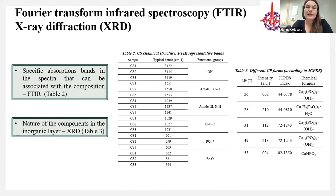FTIR delivers key data about molecular vibration within functional groups, resulting in specific absorption bands in the spectra that can be associated with the composition. In our study, we identified functional groups presented in Table 2. All these functional groups are specific to the components of our scaffolds: the three biopolymers, calcium phosphates, and the magnetite nanoparticles.